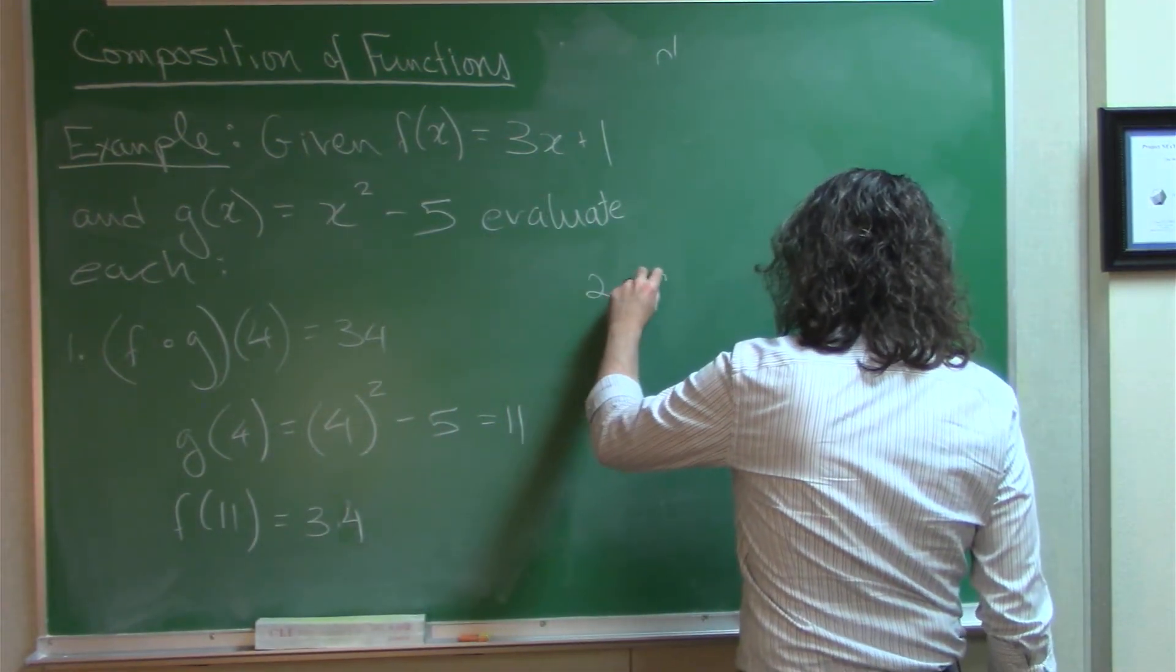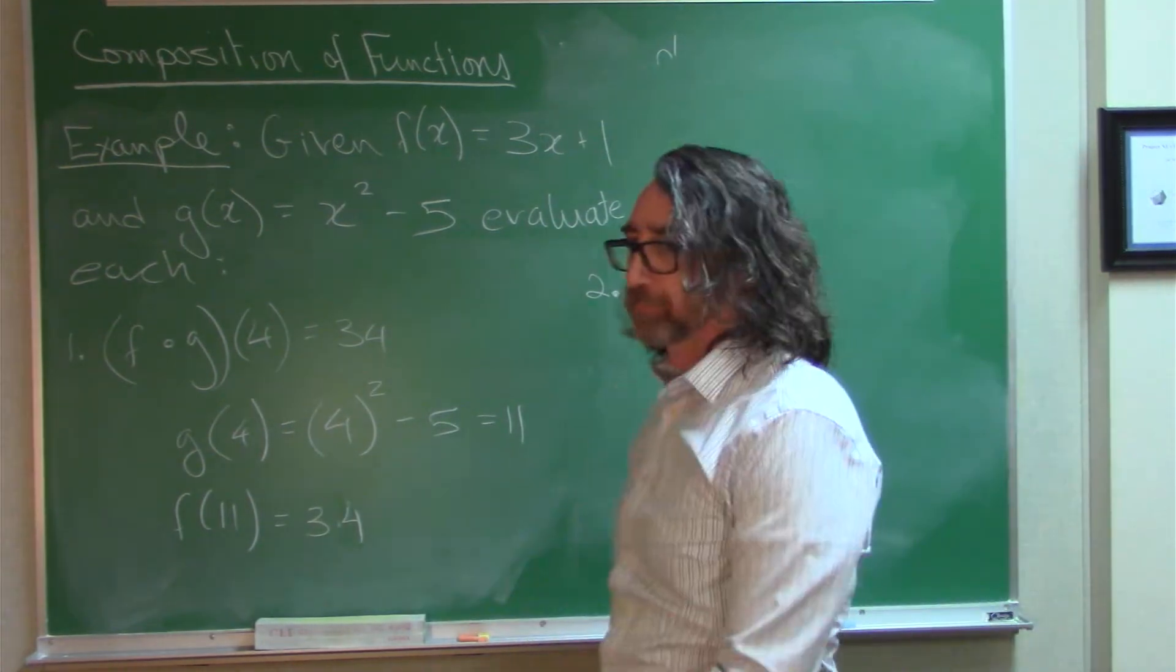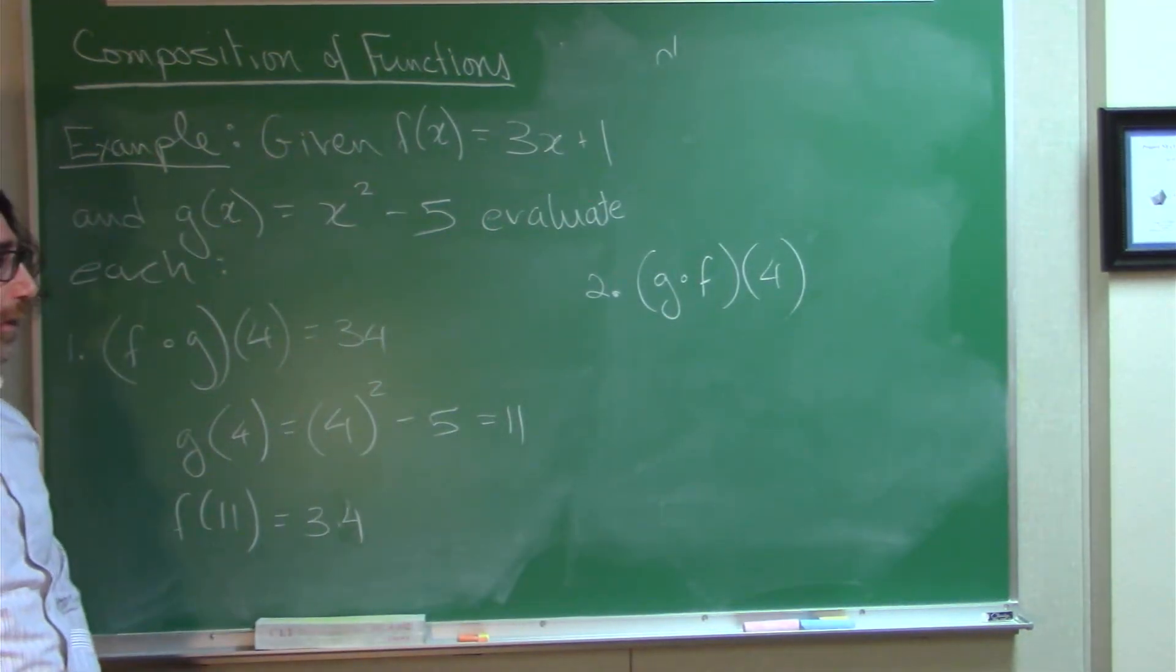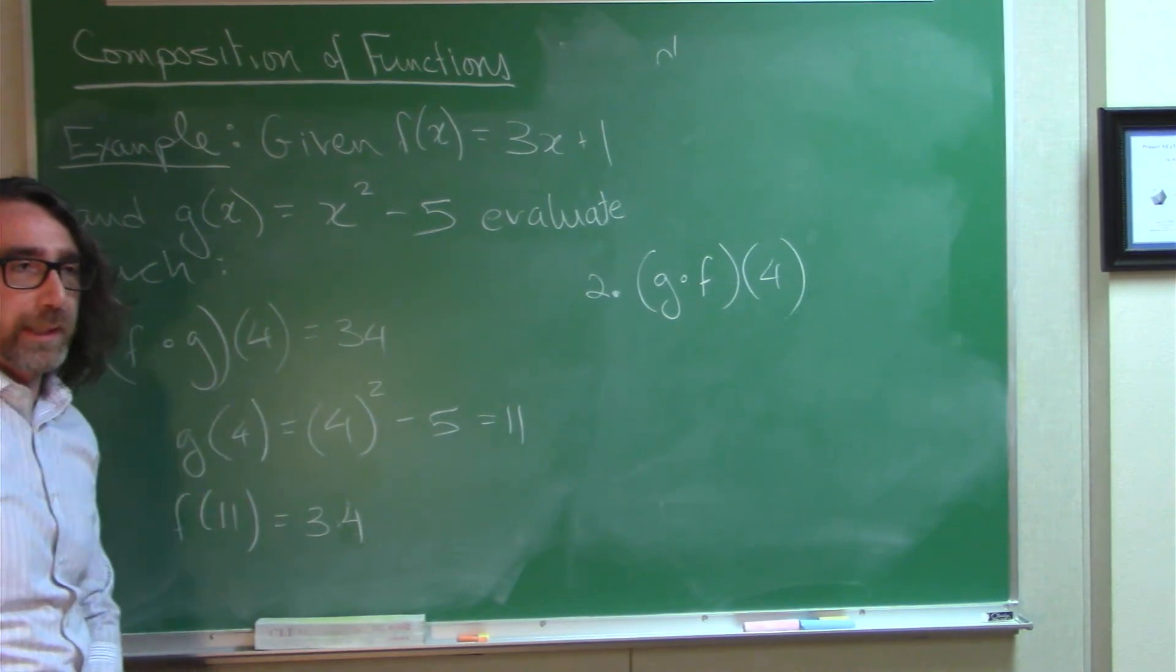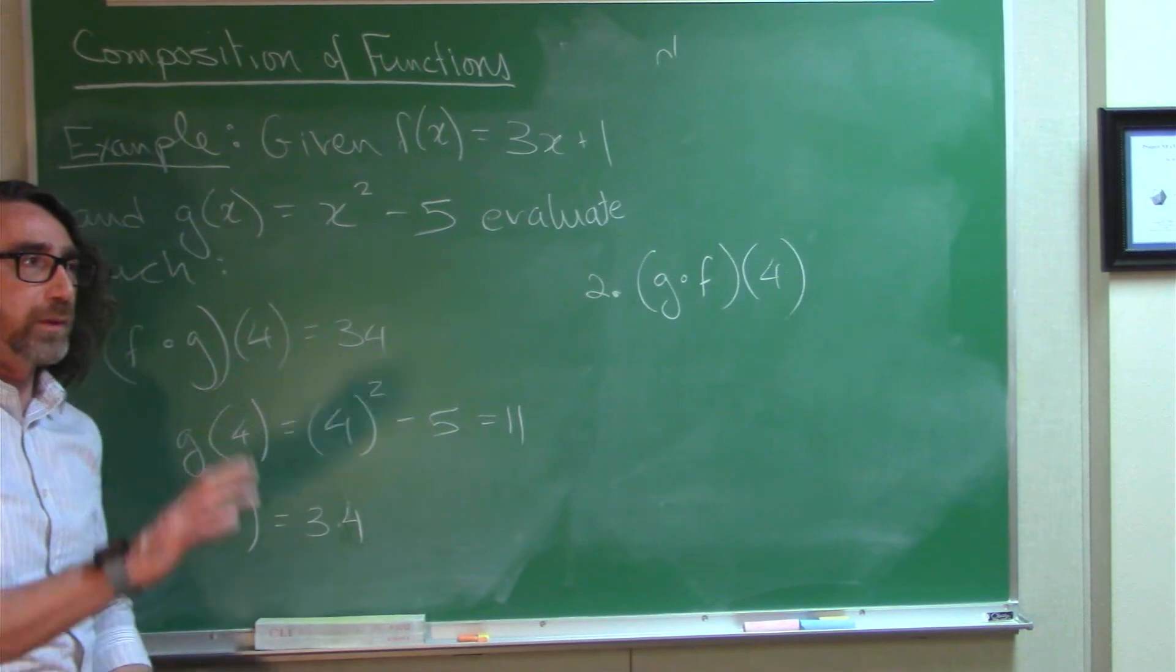Let's do it the opposite way. G of F of 4. Okay, G of F of 4. Now, function composition is what we call a non-commutative operation. Typically, order matters.